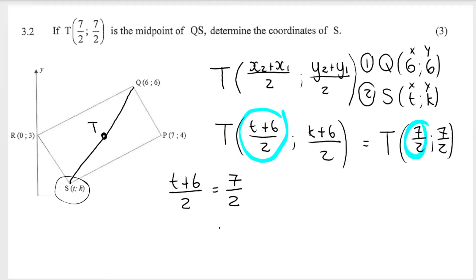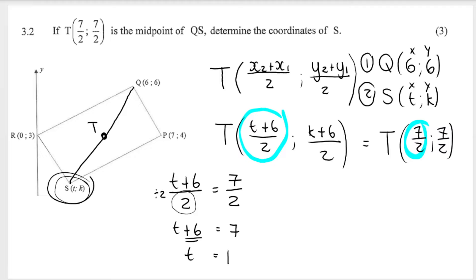Now I'm going to solve — silly mistakes can be made here. This is dividing by 2 on this side, so we must do inverse operations. The opposite of divide by 2 is times by 2. So when I take the divide by 2 over, it becomes times 2: 7 over 2 times 2 gives me 7. I'm left with T plus 6, and then to get T by itself, the opposite of adding 6 is minus 6. So 7 minus 6 is 1. So far I know that S — the X part, T — is 1.